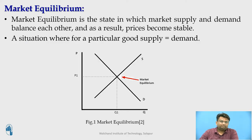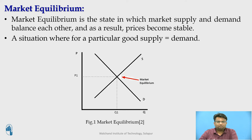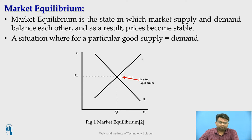So, what is market equilibrium? Market equilibrium is the state in which market supply and demand balance each other, and as a result, the price becomes stable. It is a situation where, for a particular good or service, the demand and the supply are equal. In the diagram shown, the equilibrium price is P1 and the equilibrium quantity is Q1. At price P1, the quantity supplied is Q1, and we have the equilibrium point — the point where the supply and demand curves meet each other.